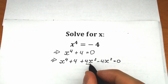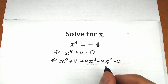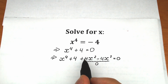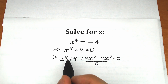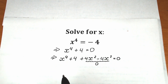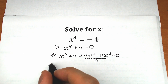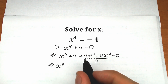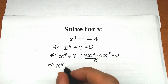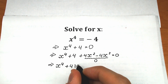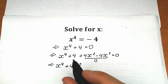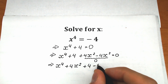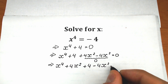Obviously this changes nothing because we also subtract 4x squared, so the expression remains equal to zero. Now let's rearrange the order: x to the fourth power, plus 4x squared, plus 4, minus 4x squared, equal to zero.